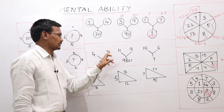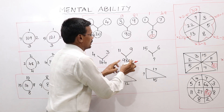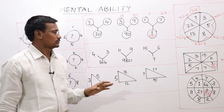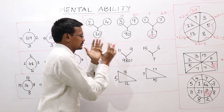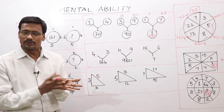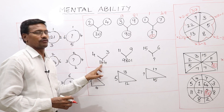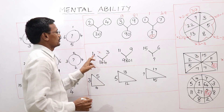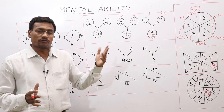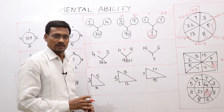Now come to this question. Here we have 4 and 3, and the number 144. Also 11 and 9. Why do we have the bigger number? Maybe multiplication, maybe cubes, maybe squares? 4 into 3 is 12, 12 squared is equal to 144. So for relation: 4 × 3 = 12 and 12 squared = 144 — it may be true.